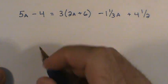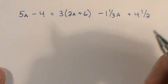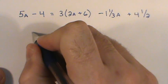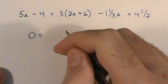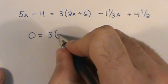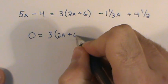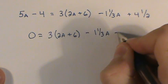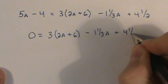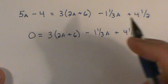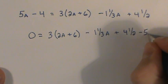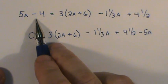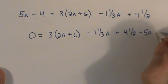I'm pointing to the left-hand side because it's much easier to move these two terms. So zero is equal to 3(2a+6) minus 1⅓a plus 4½. And as I bring this 5a over, I'll bring it over as a minus 5a. And as I bring the negative four over, I bring it over as a plus four.